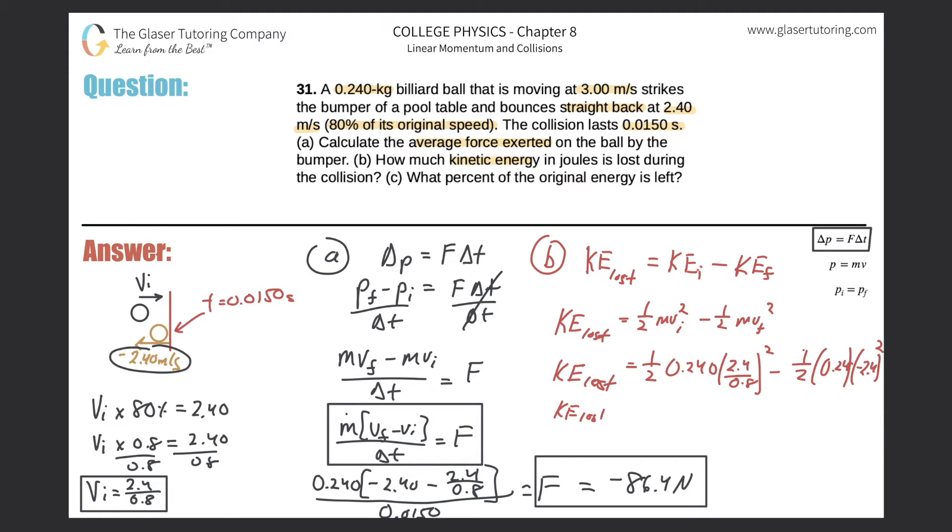We've got 0.5 times 0.24 times parentheses 2.4 divided by 0.8 squared, minus 0.5 times 0.24 times 2.4 squared. And look at that. We get a value of 0.389 joules. Those are the units for kinetic energy. So that's the amount of kinetic energy that was lost.